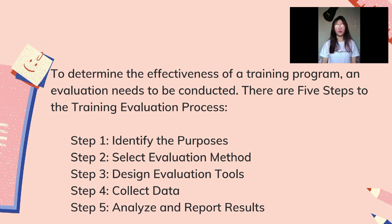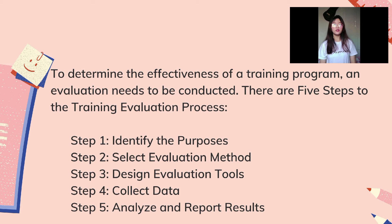The steps to the training evaluation process are: first, identifying the purpose of evaluation; second, selecting an evaluation method; third, designing evaluation tools; fourth, collecting data; and fifth, analyzing and reporting the results. Identifying the purpose answers why we want to evaluate the training programs — the answer affects the types of data collected and the data collection method selected. When selecting an evaluation method, there are different methods and tools used, and sometimes it is applicable to utilize more than one method, with the choice influenced by time, resources, and level of depth needed.